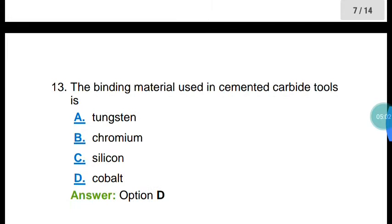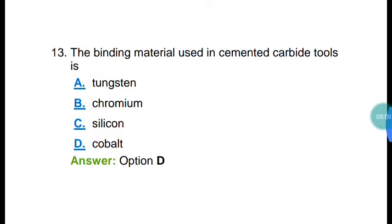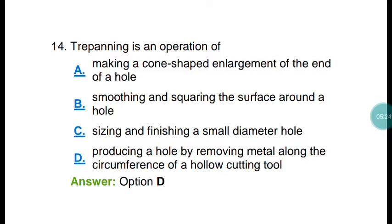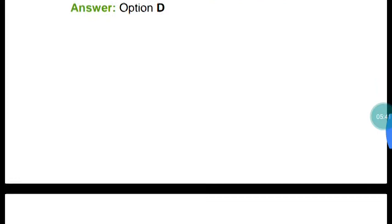Question number thirteen: the binding material used in cemented carbide tools is cobalt. Cobalt is used as a binding material in cemented carbide tools. Question number fourteen: trepanning is an operation to produce a hole by removing metal along the circumference of a hollow cutting tool.